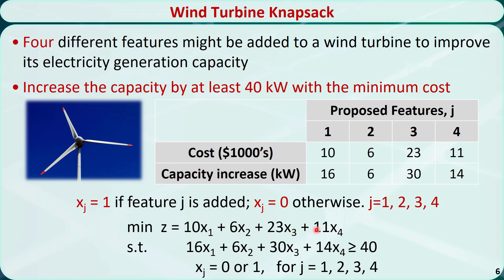The original constraint function, which is the total cost, is now the objective function. We can solve the problems using the branch and bound method. That is all about knapsack problems. Thanks for watching.